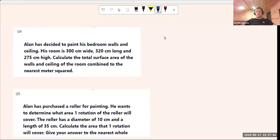We're told that Alan has decided to paint his bedroom walls and ceiling. His room is 300 centimeters wide, 320 centimeters long, and 275 centimeters high. Calculate the total surface area of the walls and ceiling of the room.